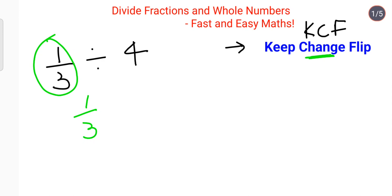C means change — you change the division sign to multiplication. And then F means flip, meaning you do the reciprocal. So the reciprocal of 4 is 1 upon 4.